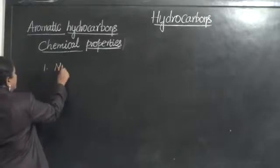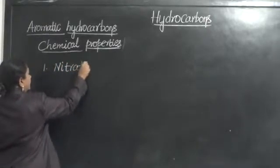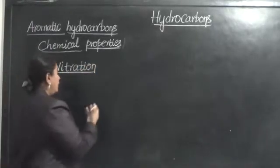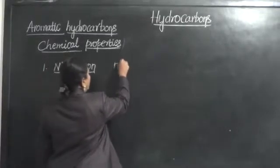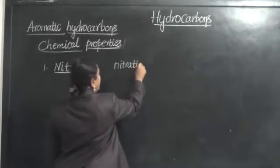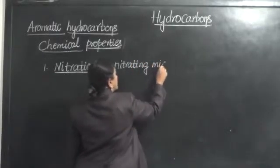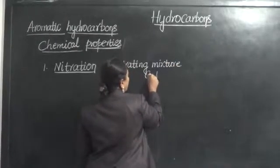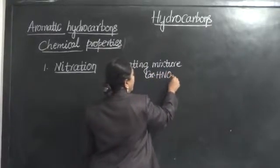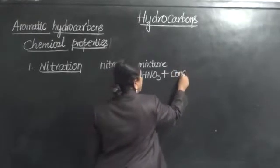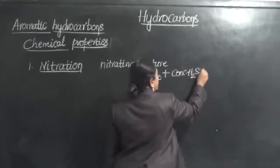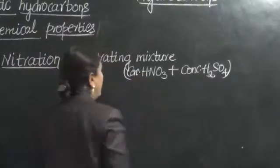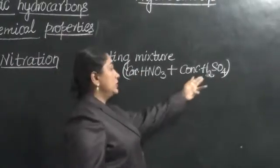Let us start with the first property, namely nitration. One fundamental thing students should remember is that whenever we carry out the process of nitration, we will be making use of nitrating mixture. So what is this nitrating mixture? It is a compound of concentrated nitric acid along with concentrated sulfuric acid. This mixture contains two strong acids: concentrated nitric acid and concentrated sulfuric acid.